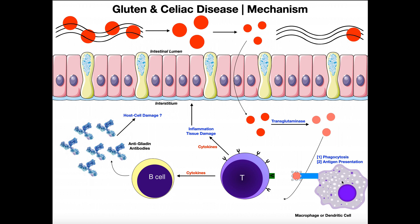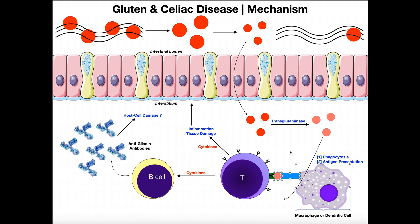Once the macrophage digests that protein and displays it on the cell surface receptor, it can interact with this T cell — specifically a helper T cell, whose function is to initiate an immune response. The T cell will mount an immune response against anything that resembles this gliadin peptide, and theoretically there are a lot more gliadin peptides and gluten-related compounds present.